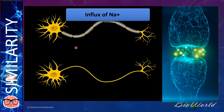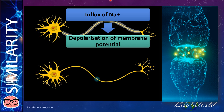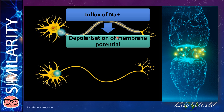For the axon, the influx of the sodium ion is from the tissue fluid into the axoplasm, whereas for the synapse, the influx of the sodium ion is from the synaptic cleft, the space in the synaptic cleft, into the dendrite. The second similarity is that the influx of the sodium will cause depolarization of both membranes, that is the membrane of the axon as well as the post-synaptic membrane.